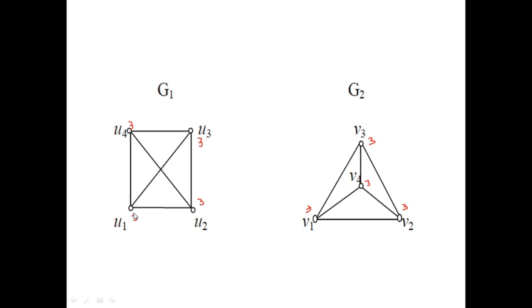Now you can see u1 has degree 3, which is adjacent to vertices of degree 3, 3 and 3. You can take any one of these degree-3 vertices and see the same adjacency degrees. Here one of the degree-3 vertices has incidences of degree 3, 3 and 3. Similarly u2 whose degree is 3 is adjacent to 3, 3, 3. Again you can take v2 of degree 3, which is adjacent to 3, 3, 3. So you can check for all other vertices also — the same number of degrees are there. Hence we can say that G1 and G2 are isomorphic.